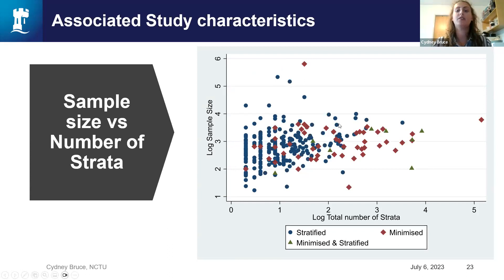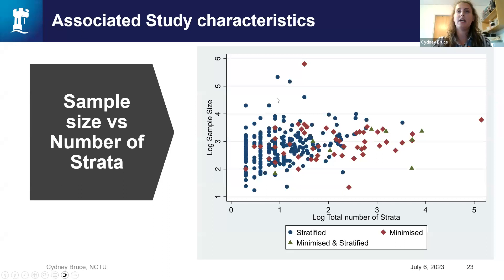There's also evidence that stratification is used for higher sample sizes. In a figure comparing the log of the sample size with the log of the total number of strata — where strata means the product of categories from the randomisation variables — we can see trials using stratification tend to have higher sample sizes, while minimisation becomes much more prominent after a log value of two, which is around 100 strata.